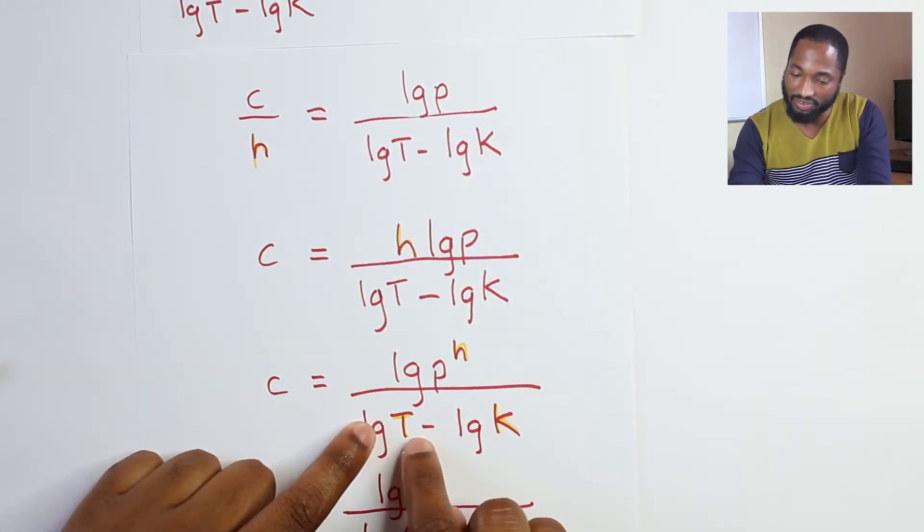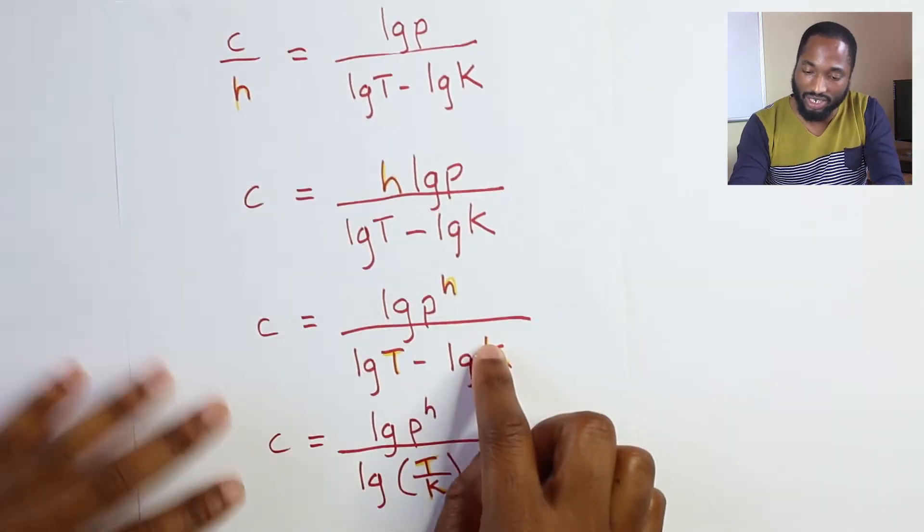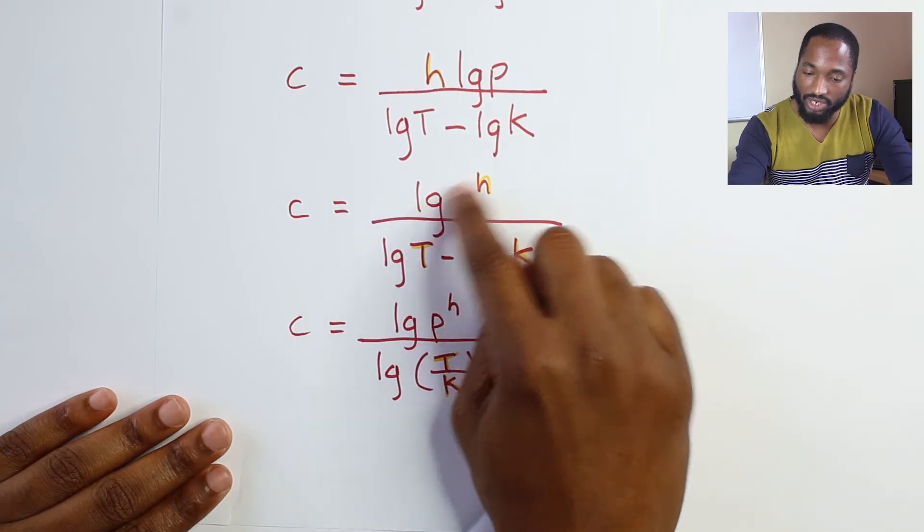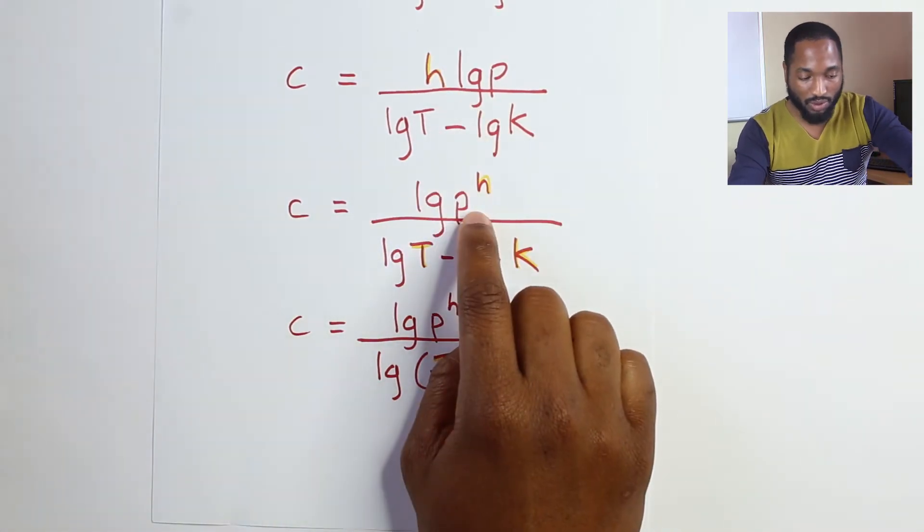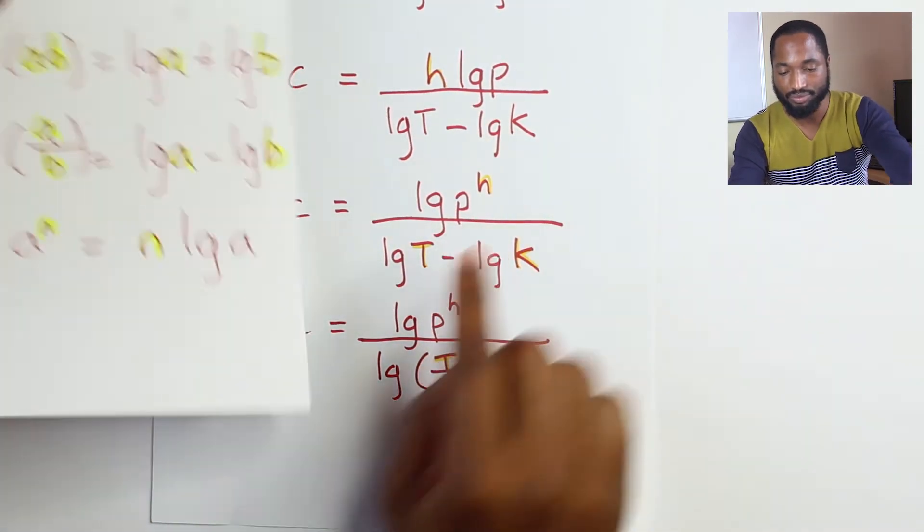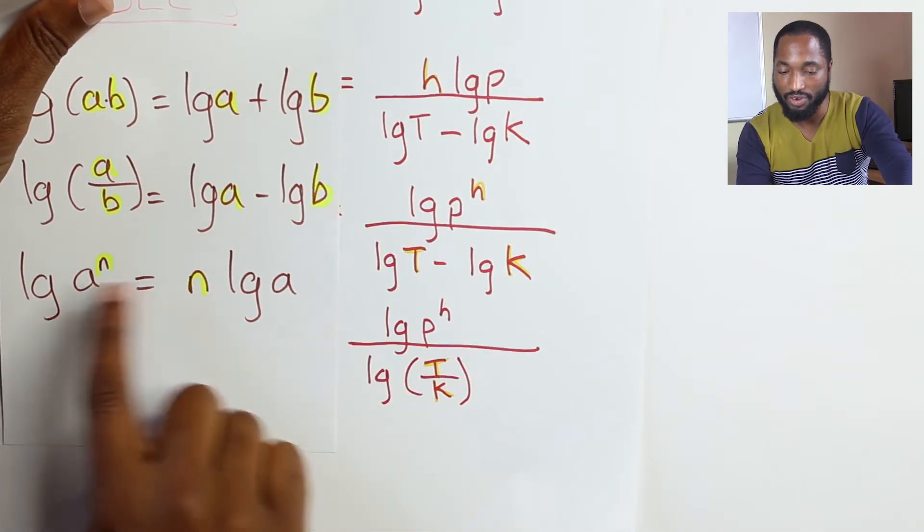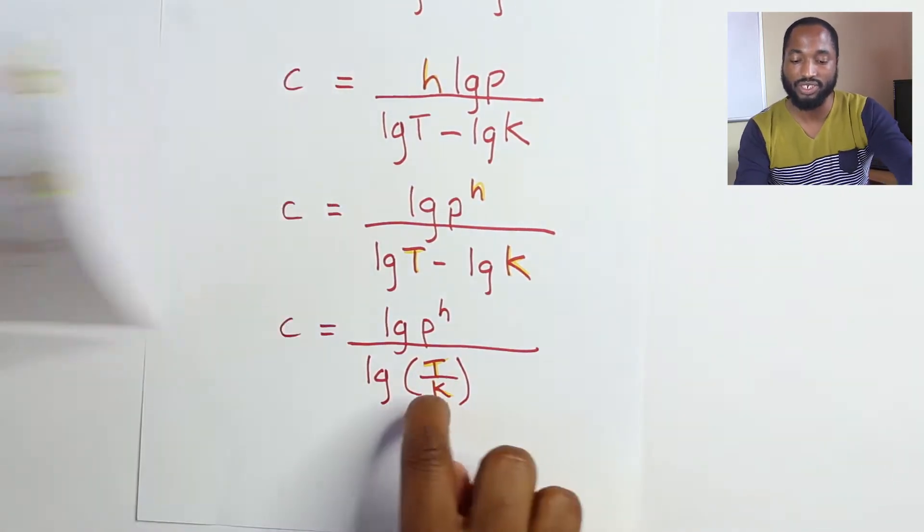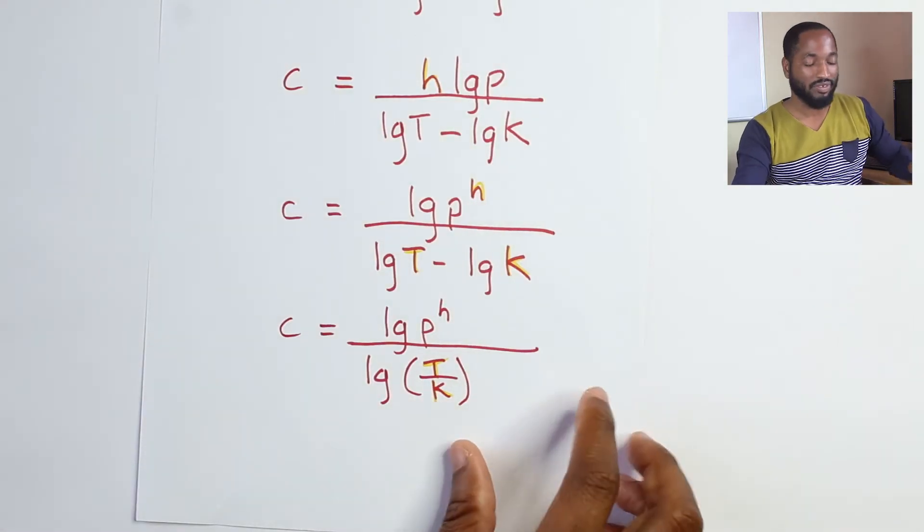Since this is log(T) take away log(K), we can actually let this look like this. Since this is logs, we use back this rule just in reverse. Answer: c = h·log(P)/log(T/K). That's the first part - collect the marks and move along with your life.